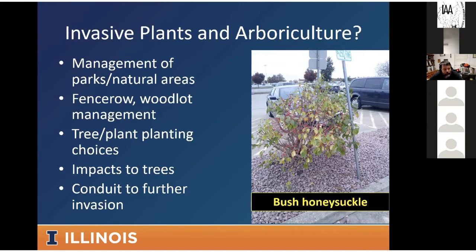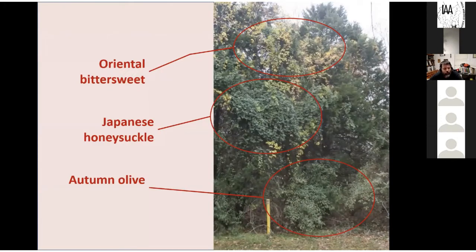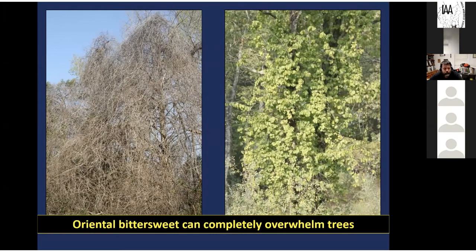Some species are a direct conduit for further invasion — either spreading that species around or facilitating other invasives. Callery pear and Bradford pear were planted widely throughout the eastern U.S. and are now among the fastest spreading invasive species we have. Japanese stiltgrass invading a campground is an area where an arborist may be treating trees but could recognize invasives in the understory. Oriental bittersweet is called the kudzu of the north for its ability to grow over trees, girdle them, kill them, and shade them out.